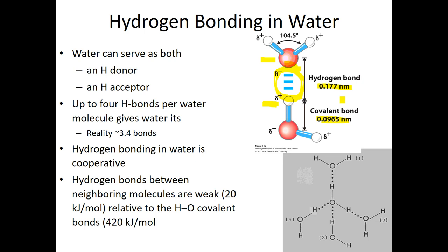The answer is that sometimes we need a weaker bond — one strong enough to hold molecules together but weak enough to break when needed. Think about DNA, for example. DNA is hydrogen bonded together by its nucleobases, and we want those bases to be able to come apart when we need to replicate or transcribe DNA. If we consider one water molecule using both its partial positive hydrogen atoms and partial negative lone pairs, it can form a total of four hydrogen bonds. In reality, about 3.4 hydrogen bonds exist at any given time because they are constantly being made and broken.